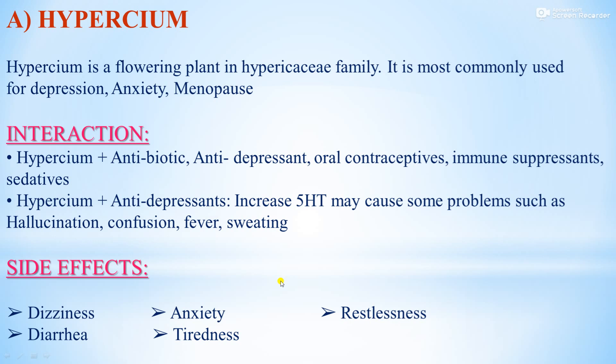The first drug is Hypericum. Hypericum is a flowering plant in the Hypericaceae family. It is most commonly used for depression, anxiety, and menopause. Interactions of Hypericum include combinations with antibiotics, antidepressants, oral contraceptives, immune suppressants, and sedatives.